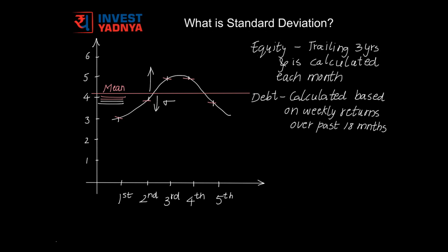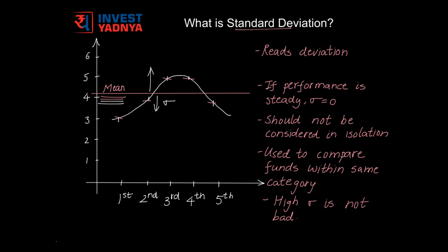The time span considered for calculation of average returns and the frequency of calculation of Standard Deviation may be different for different fund fact sheets and scorecards. But in case of fund analysis videos by Yadnya Investment Academy, Standard Deviation in case of equity would be calculated based on returns of trailing 3 years and would be calculated each month. And in case of debt funds, it would be calculated based on weekly returns available over the past 18 months.